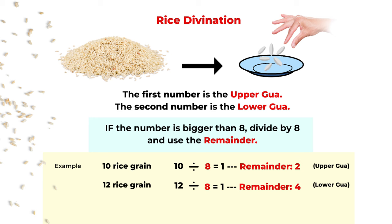For example, if you pick 10 grains of rice and divide by eight, it's one with a remainder of two — so two is your gua number. Repeat again; say this time it's 12 rice grains. Divide by eight and you get one with a remainder of four, so four is the second gua number. Some books use the first number as the lower gua and the second as the upper gua; more recent books show the opposite. It doesn't really matter as long as you keep the process the same every time — it will still work.